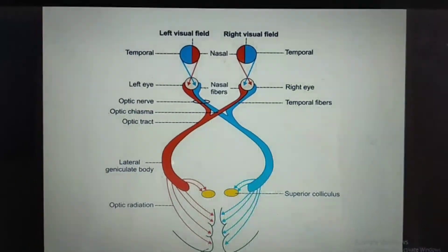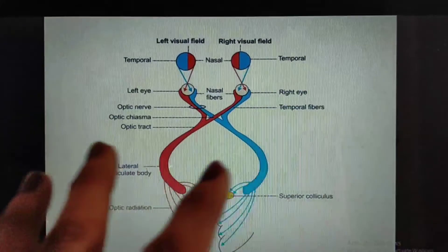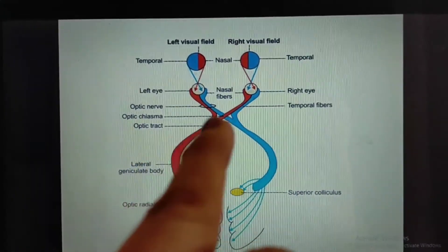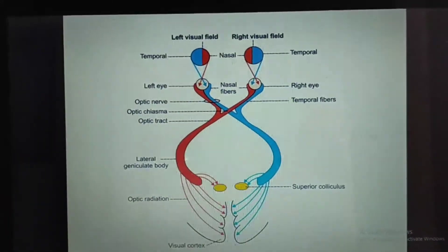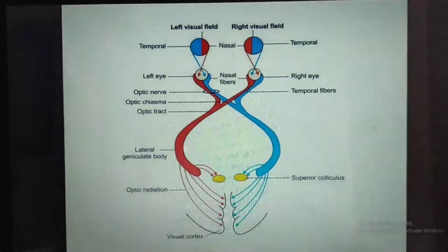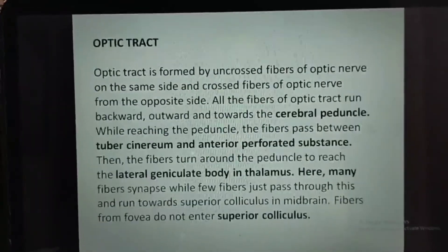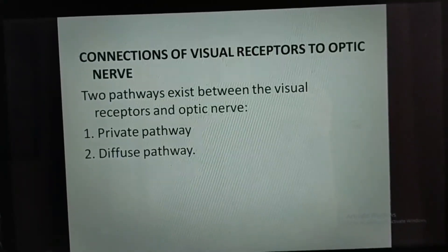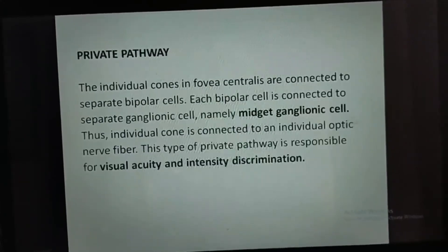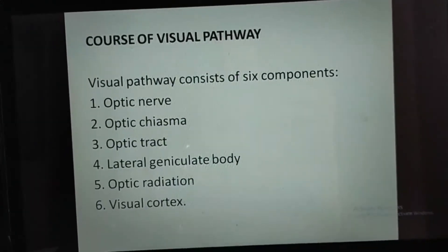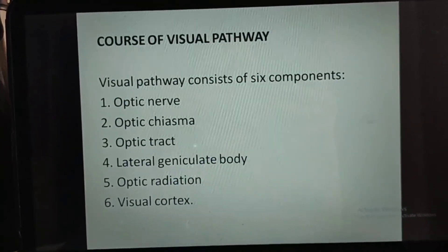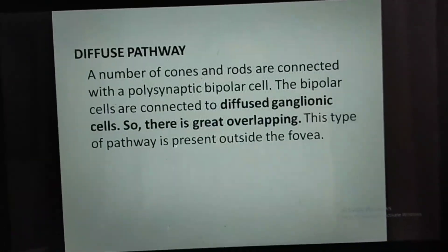In this figure, we can see the visual pathway. This is the left visual field and this is the right visual field, with the left eye and right eye shown. There is the temporal part and the nasal part. The pathway components visible are: the optic nerve, then the optic chiasma, optic tract, lateral geniculate body, superior colliculus, optic radiation, and then the visual cortex. To summarize, you need to write about the first, second, and third neurons, the connection of visual receptors to the optic nerve, private and diffuse pathways, and the course of visual pathway — which is the content asked in a 5-mark question.